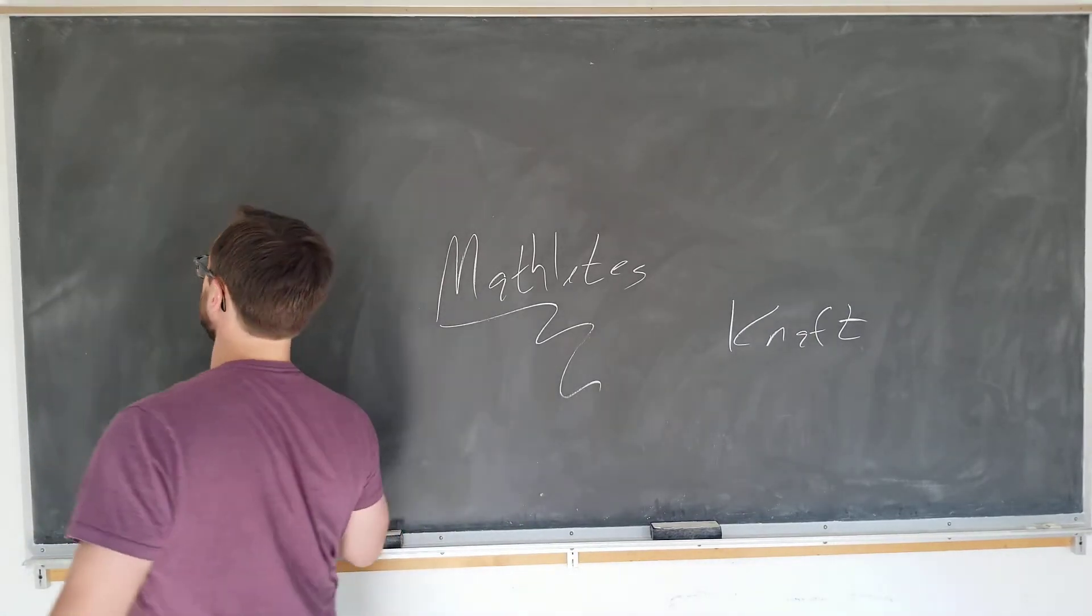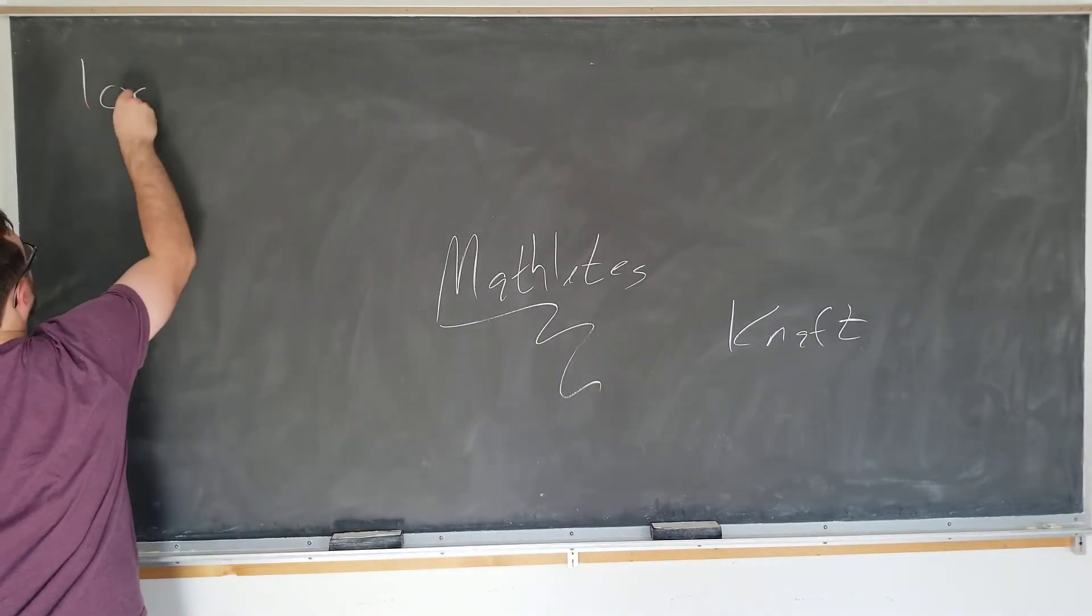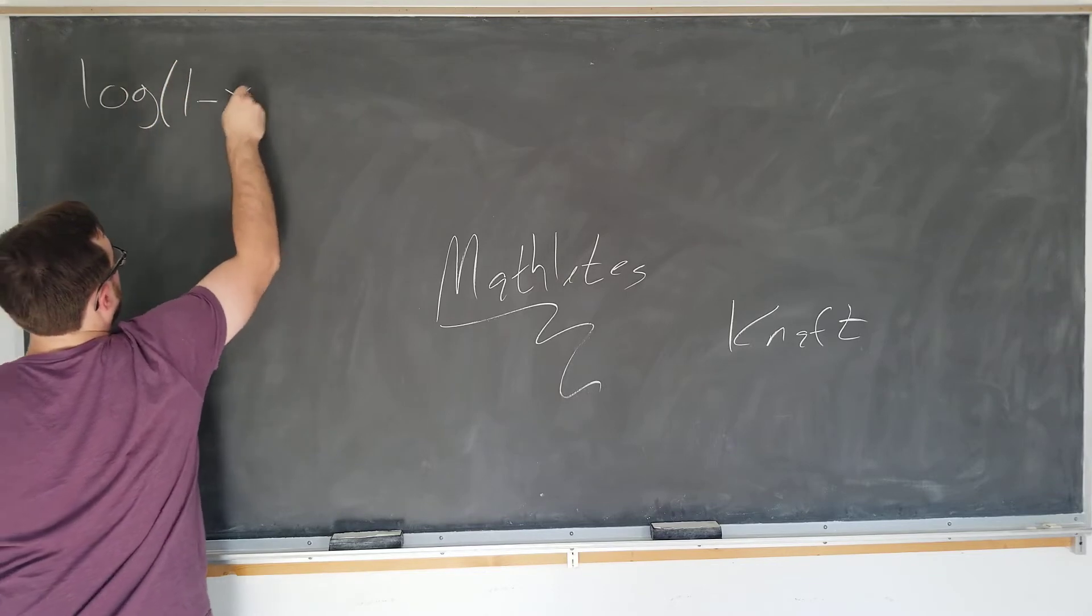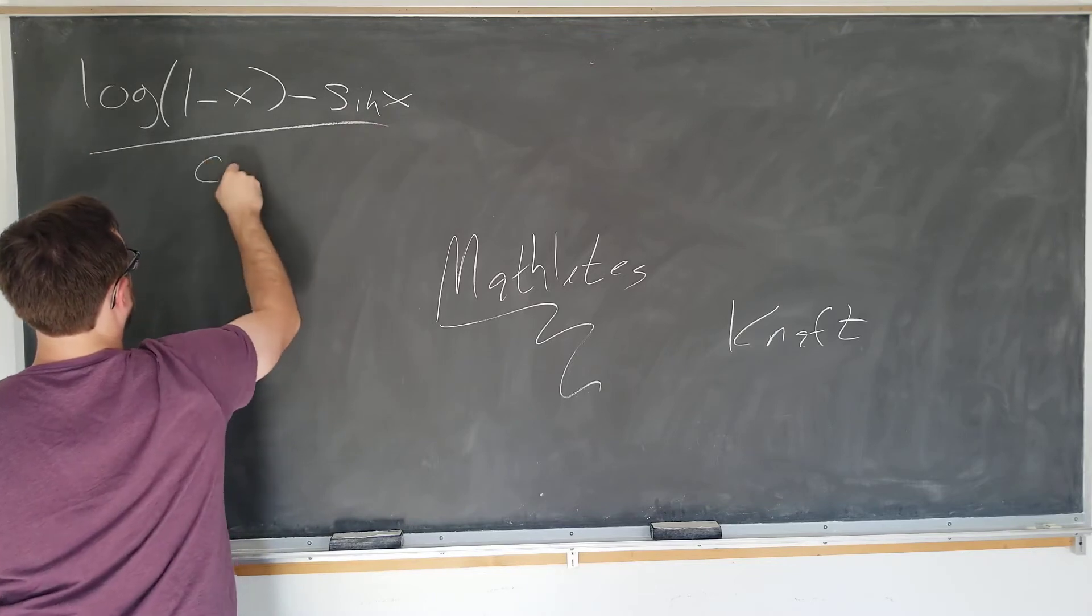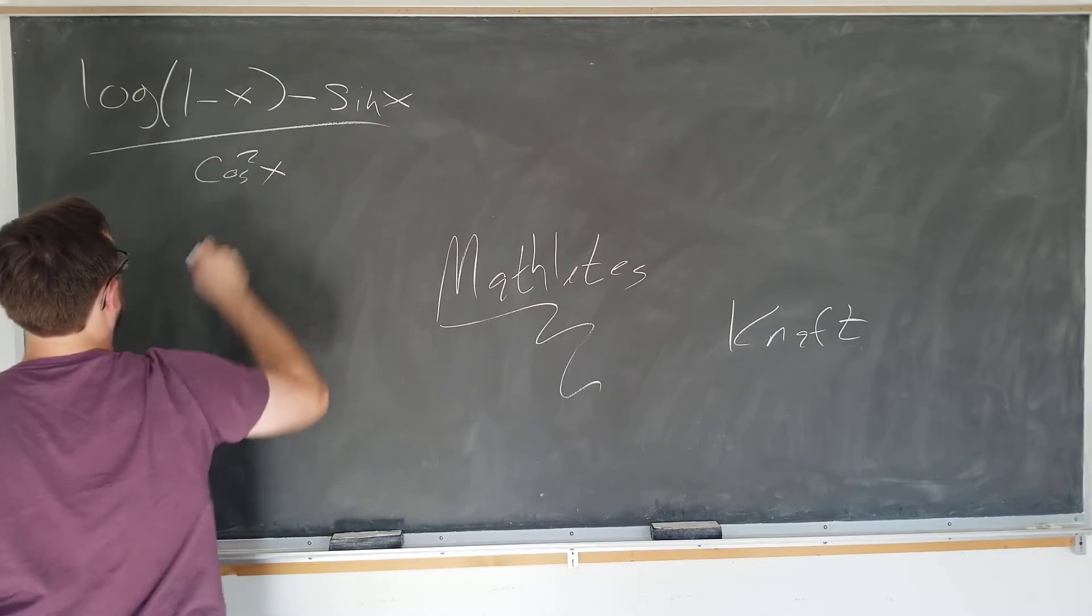log(1-X) minus sin X over cosine squared X. The problem is to find the limit as X goes to zero of this expression. That's what we want to do here.